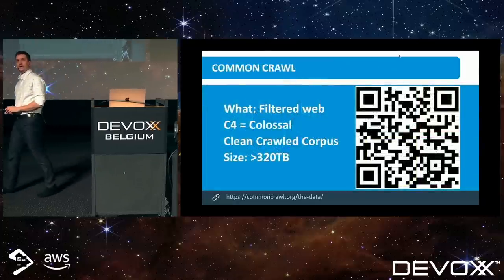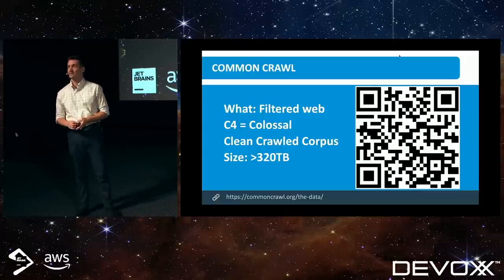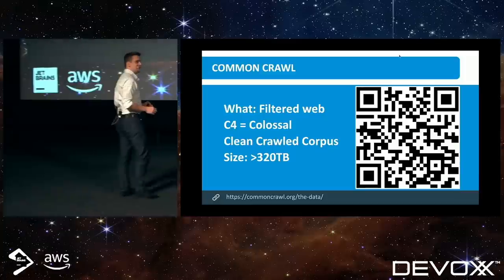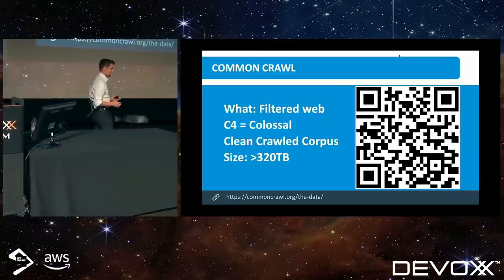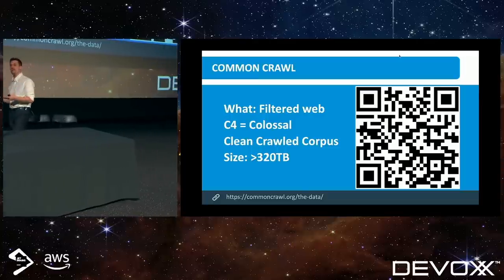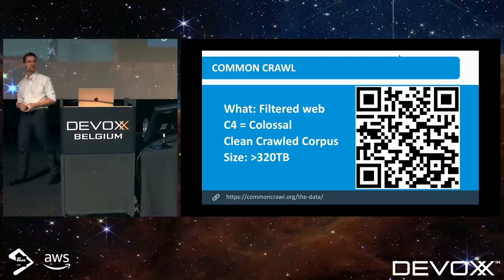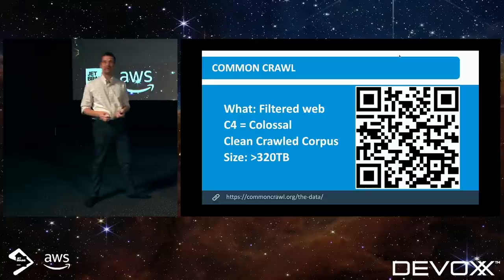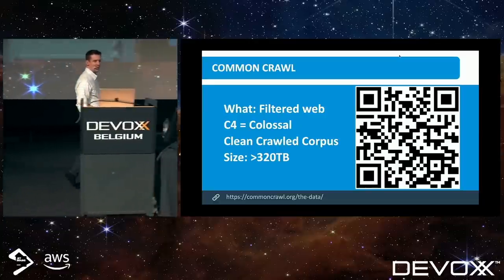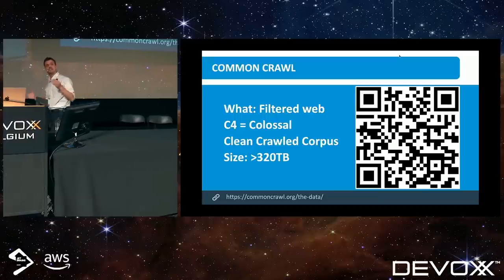Here's the big one. You'll probably need quite a large SSD to download this. They call this Common Crawl in general. Google has given it their own brand name and their own version called C4 — Colossal Clean Crawled Corpus. Over 320 terabytes, a crawl of probably the last 10 years or so of all the internet they could find.